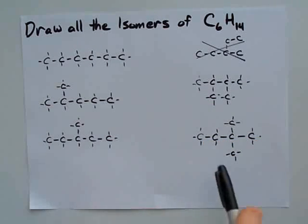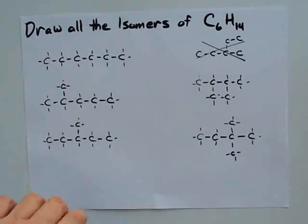So there are totally five isomers possible for C6H14.